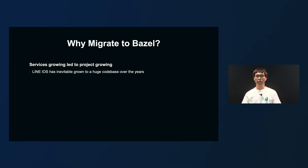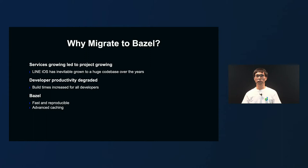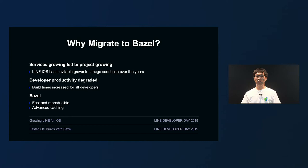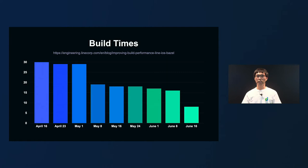So, why did we migrate the LINE iOS project to Bazel? As many LINE services grew, naturally, the LINE iOS app has also grown to a huge codebase over the years. Such a situation declined productivity of all the developers working on the projects. Given that, as part of an initiative to improve productivity of projects' build performance and developers, we decided to migrate to the Bazel build system with high-speed reproducibility and advanced caching features. If you are interested in learning about the detailed process of our migration, please check out the LINE Developer Day sessions from last year.